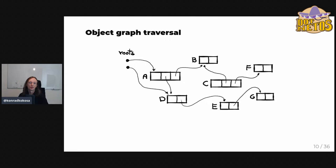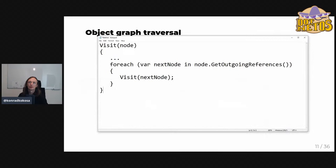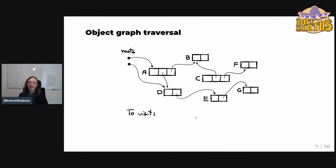Alternatively, instead of using recursion, we can create a regular list — a 'to-visit' list — stored as a list, stack, or any container. Using recursion can be dangerous because we don't know the depth of the graph and could run out of stack space. So using an explicit data structure for this to-visit list is a safer approach.